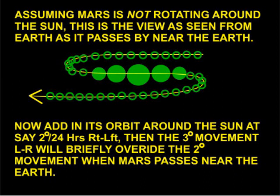Now let us add in Mars fairly slow, normal orbital speed to this motion. If it is travelling right to left at, say, 2 degrees per night, then when it is near the Earth, its 3 degrees per night left to right motion will be larger than its 2 degrees orbital speed, and it will briefly travel left to right at 1 degree per night for a short time.